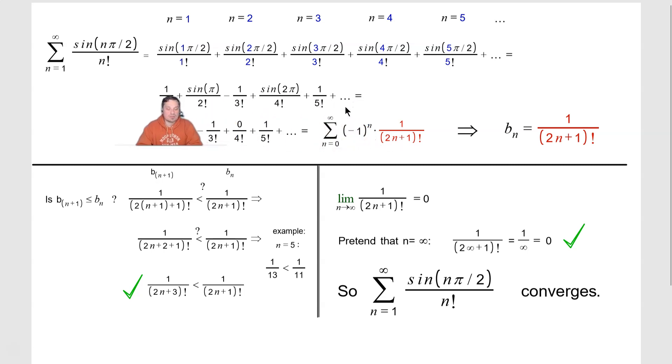Let's simplify some of these. For the first one you have 1 over 1 factorial, that's just 1. Now sine of pi is 0, so you're going to have 0 over 2 factorial.